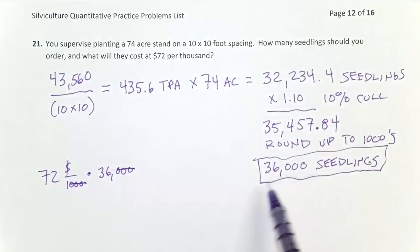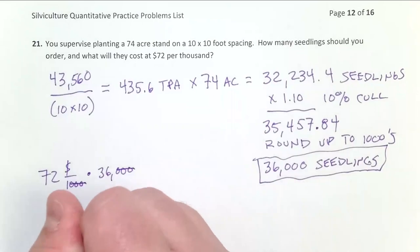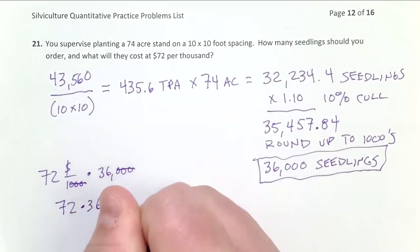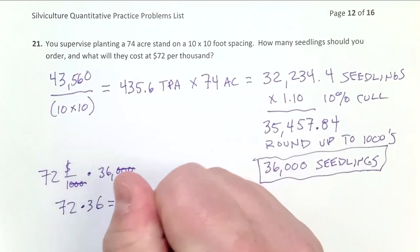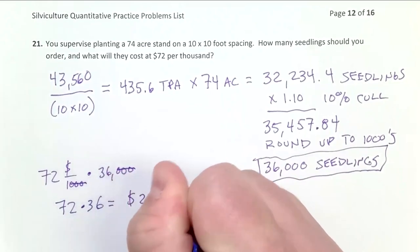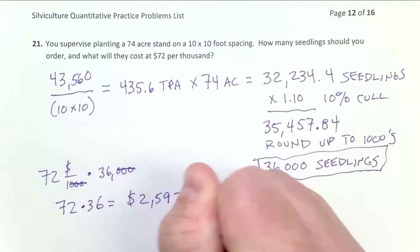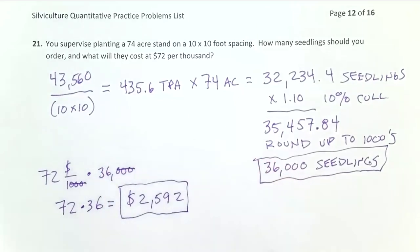So divide your seedling number by 1,000, giving you just 36. So $72 times 36 equals $2,592. So that's going to be the cost of my order. Much more reasonable than something in the millions.